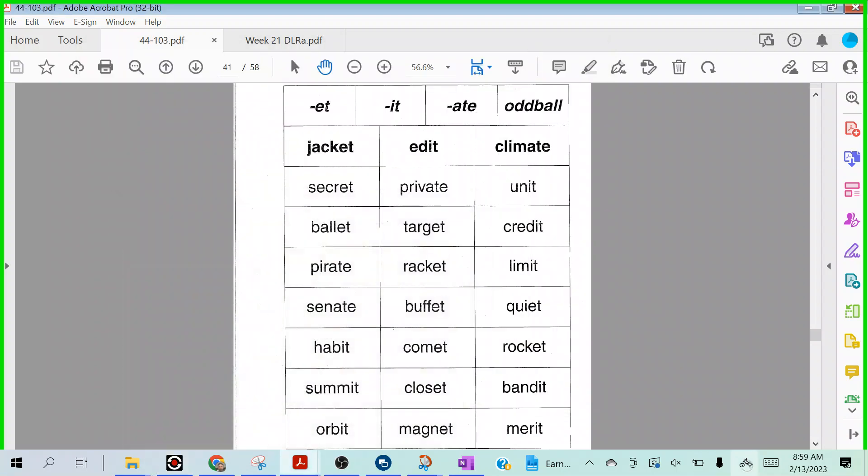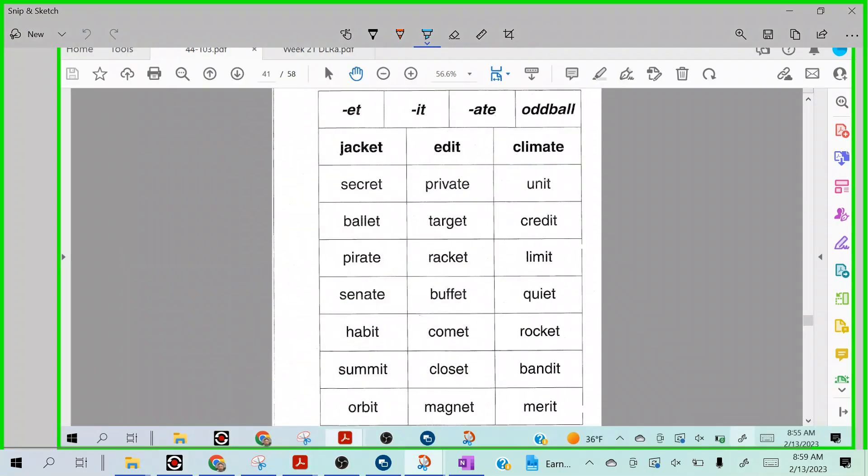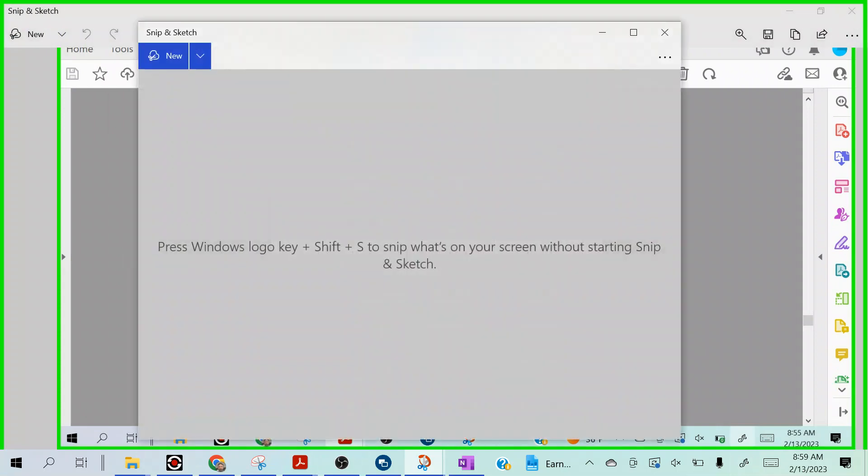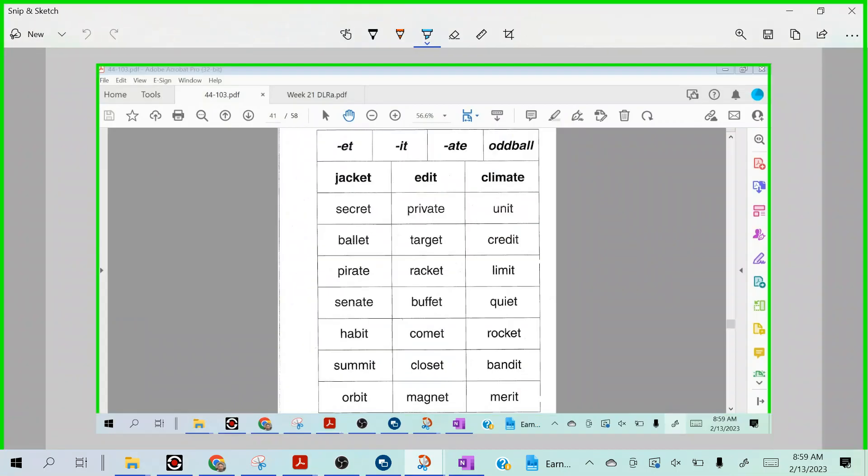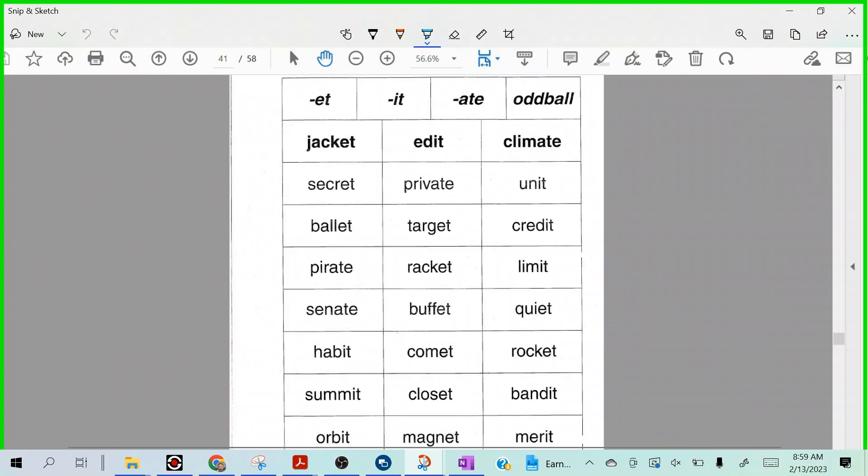All right, my green groupers, here we go. We're getting ready to start our week 35 sort, and we're looking at the unaccented final syllables E-T, I-T, and A-T-E. So first, let's do this. Let's go ahead and go through all of your words. I'll read through them. You follow along with me as I do this.